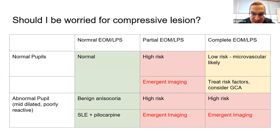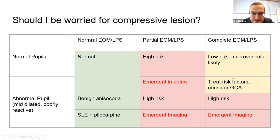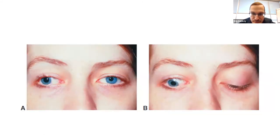Summary chart: partial third nerve palsy — whether the pupil is involved or not — requires ruling out an aneurysm or compressive lesion. A complete third with a normal pupil allows you to relax somewhat, though consider GCA in the right setting.